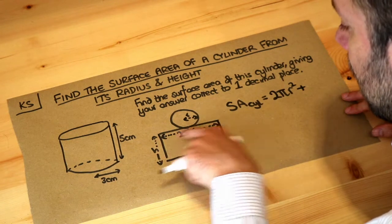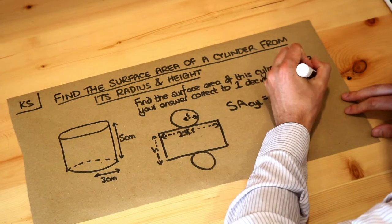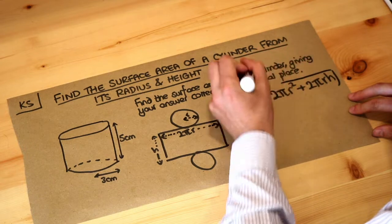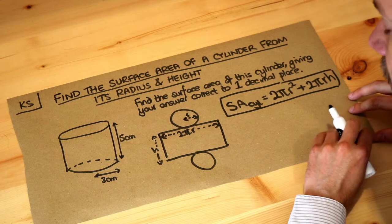Now the area of a rectangle is just length times height, so 2πr times h, so 2πrh. So that is the formula for the surface area of a cylinder.